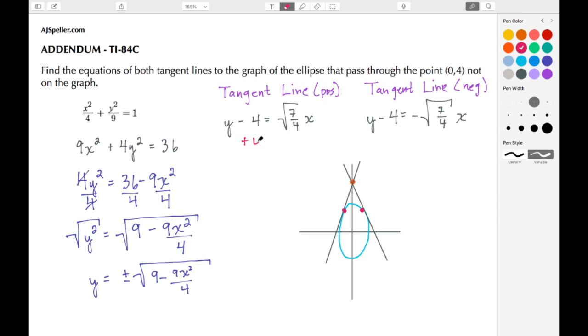To make these explicit, all I need to do is just get this negative 4 from the left-hand side. So I'm just going to add 4 to both sides. For the positive it becomes y equals square root of 7/4 x plus 4, and when I do the same thing on the equation with the negative, those fours cancel and I have y equals negative square root 7/4 x plus 4.